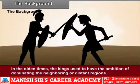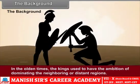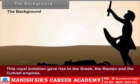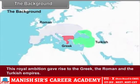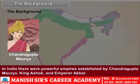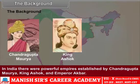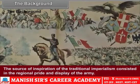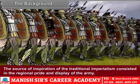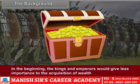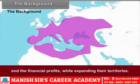In the olden times, the kings used to have the ambition of dominating the neighboring or distant regions. This royal ambition gave rise to the Greek, the Roman and the Turkish empires. In India, there were powerful empires established by Chandragupta Maurya, King Ashok and Emperor Akbar. The source of inspiration of the traditional imperialism consisted in regional pride and display of the army. In the beginning, the kings and emperors would give less importance to the acquisition of wealth and financial profits while expanding their territories.